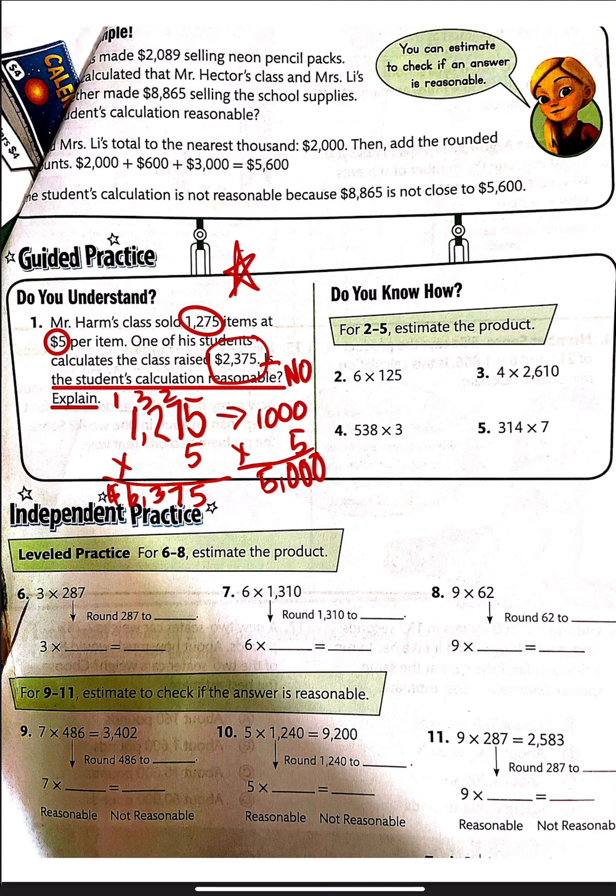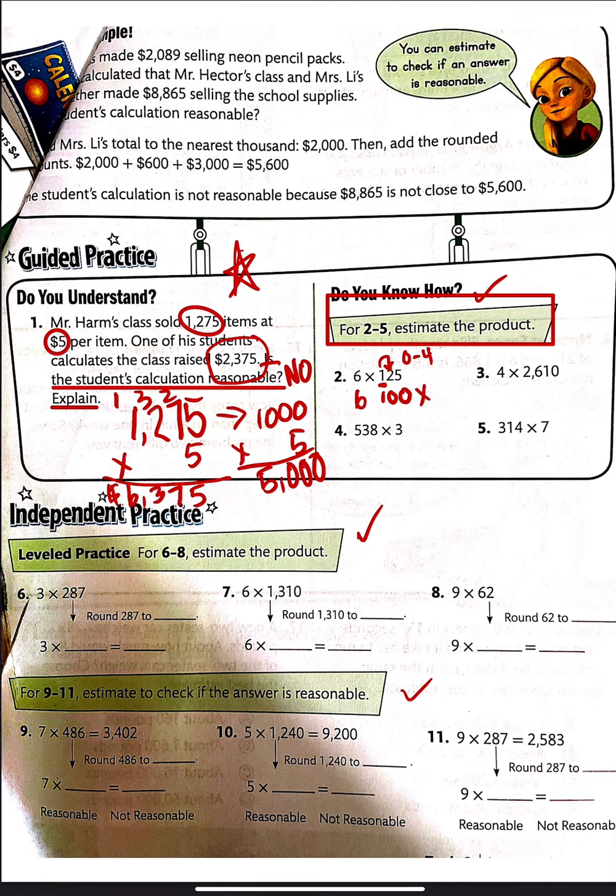So this is how this is going to work. I'm going to work one from each part, and then you're going to work the rest of them. So here it says for 2 through 5, estimate the product. You've got to read your directions, guys. I have maybe one or two students in the whole class that each time they read their directions. You can't just sit down and start working a problem. You've got to see what it's saying. So estimate the product. So we're going to round 125 to the nearest 100. So I look next door. That's a 2, and it's between 0 and 4. So my 1 stays the same. All the other numbers to the left become zeros. So 6 times 100 equals 600.